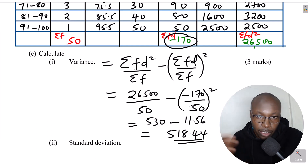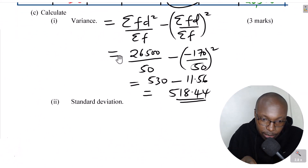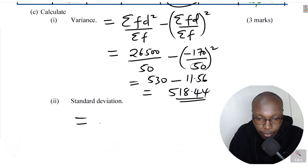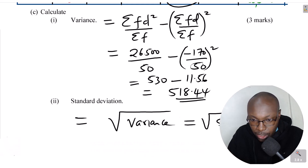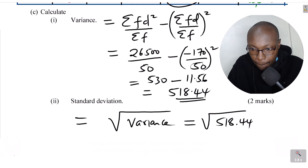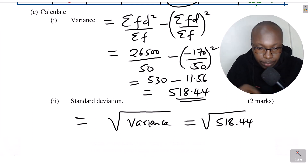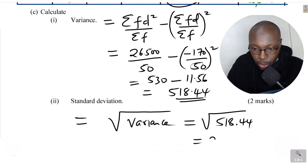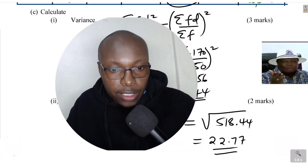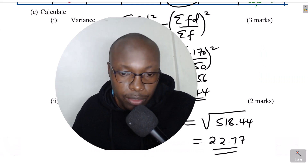Standard deviation is obtained by taking the square root of the variance. We got the variance as 518.44, so the square root of 518.44 gives 22.77. That is the answer, and that is basically how you solve that question. Thank you.